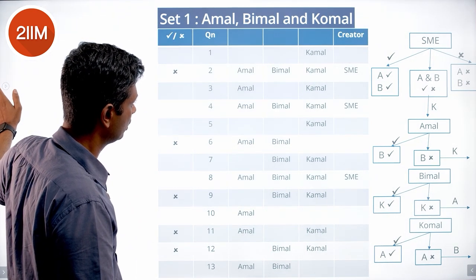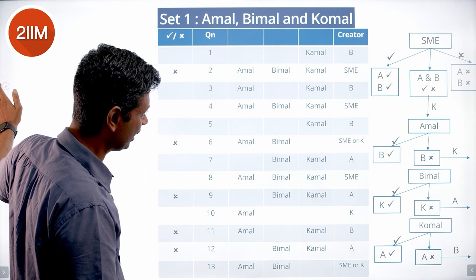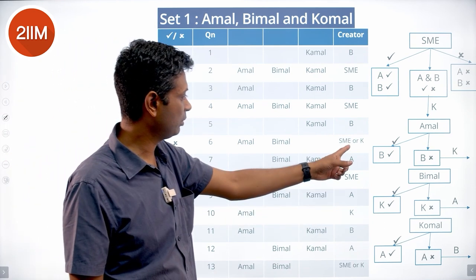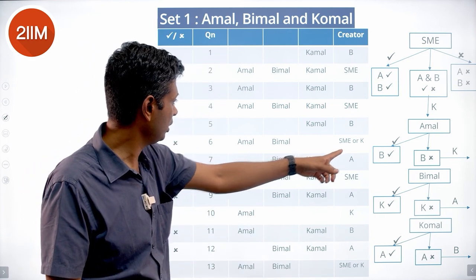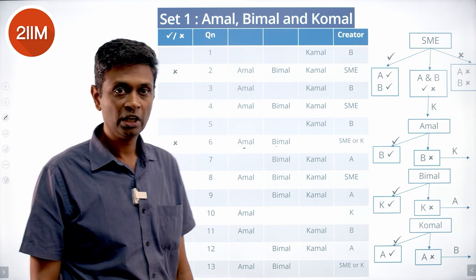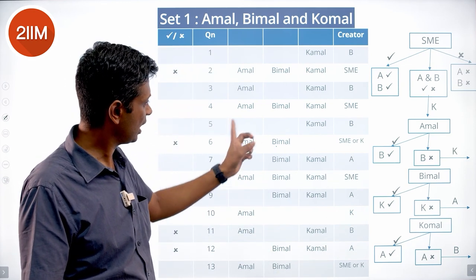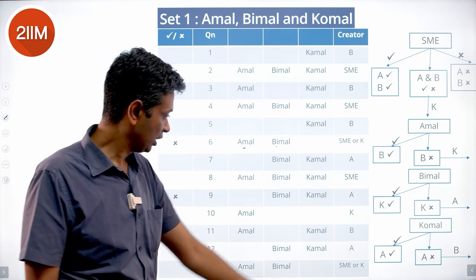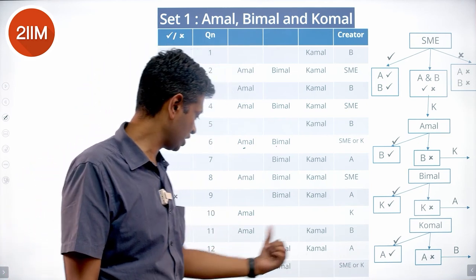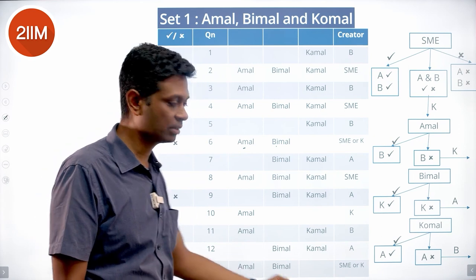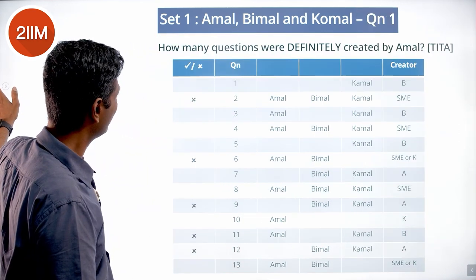Three questions should have been created by an SME — those reviewed by all three reviewers. We know the creators for most questions clearly, with two cases that are ambiguous between SME and Komal. In both ambiguous cases, either both Amal and Bimal rejected it (pointing to SME or Komal), or both accepted it.